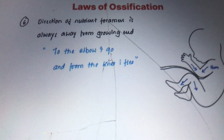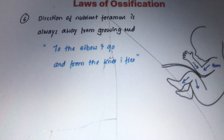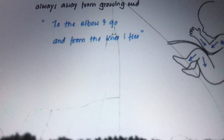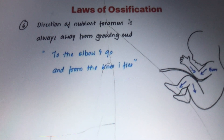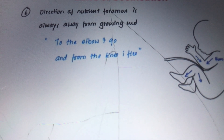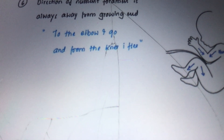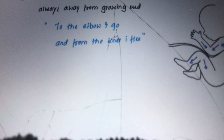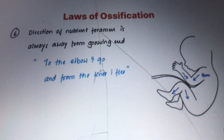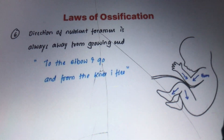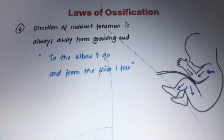One hypothesis for why the nutrient foramen is directed away from the growing end is that the growing end is slightly hypoxic, and hypoxia is a potent stimulator of growth. The ends opposite to the direction of the nutrient foramen are hypoxic and therefore show better growth.